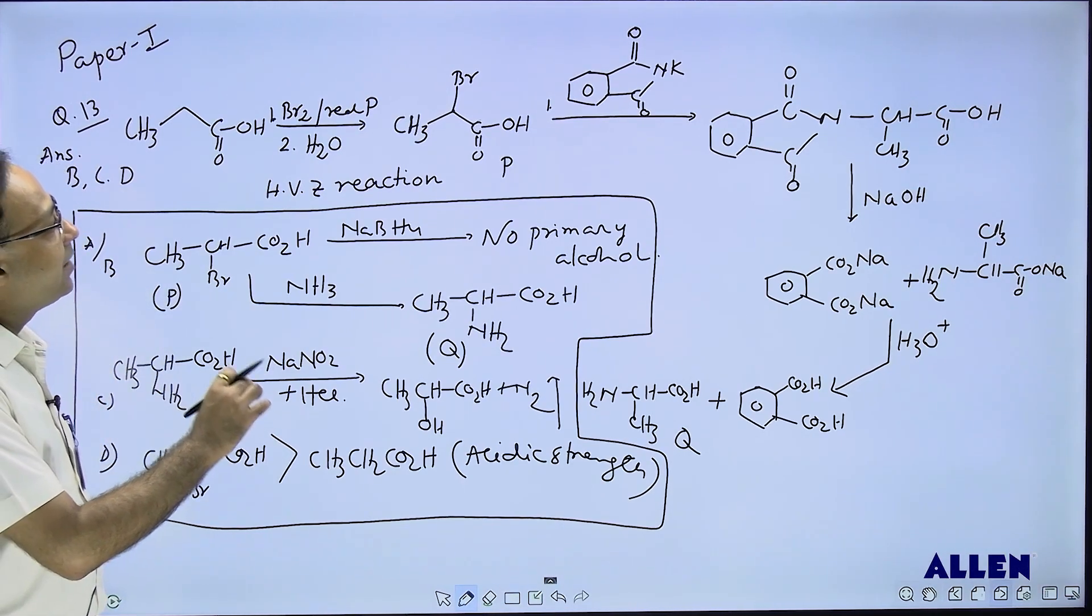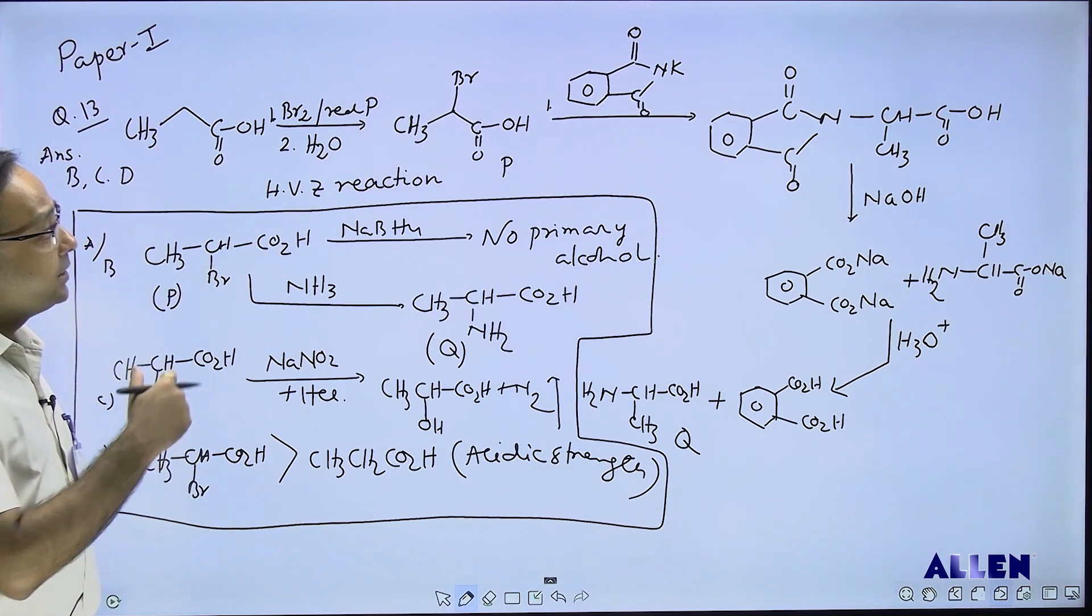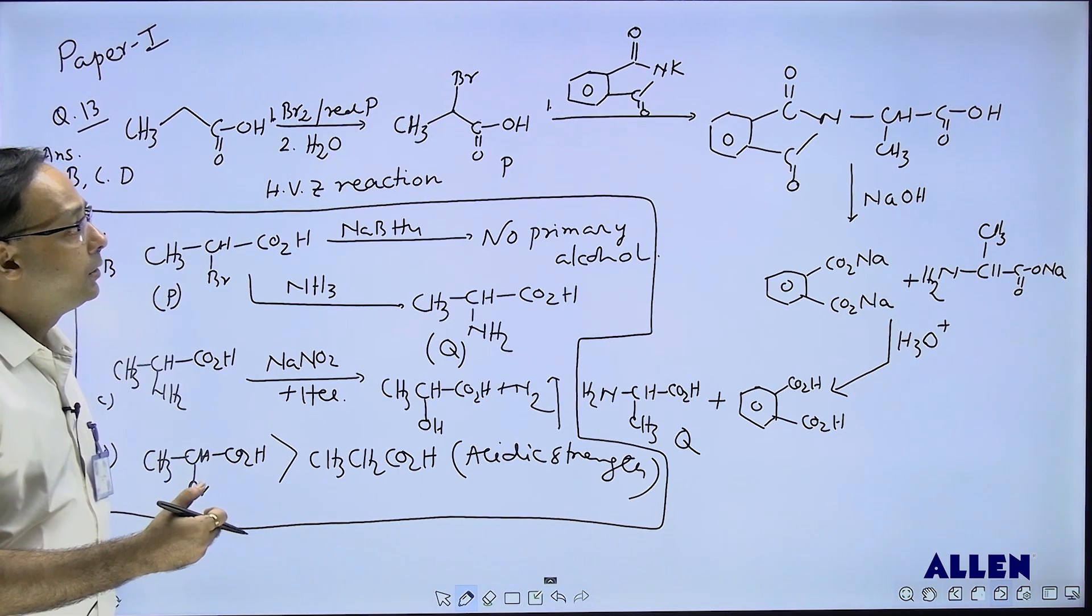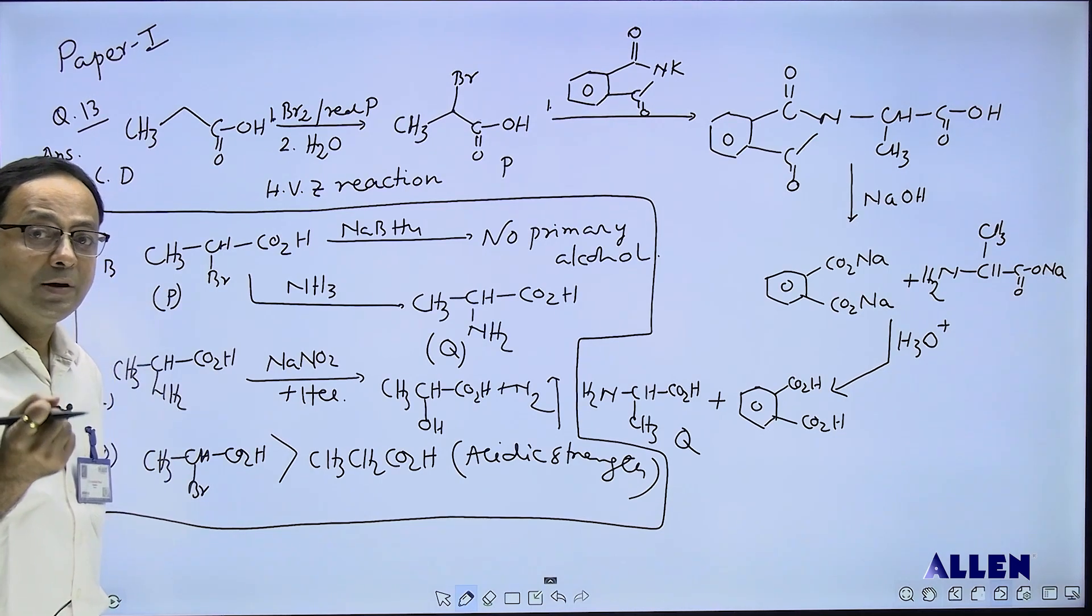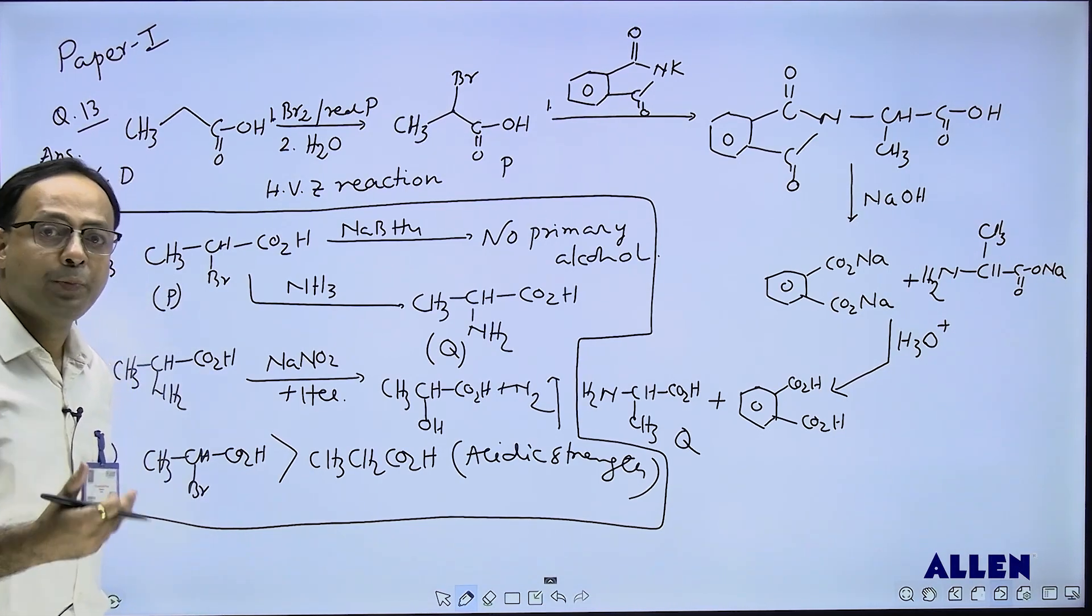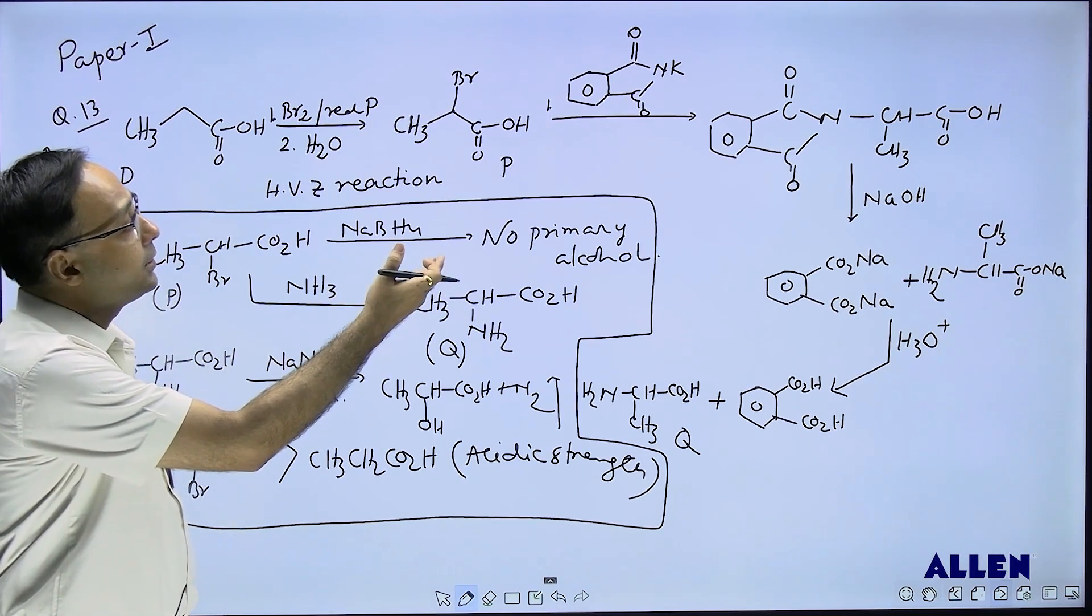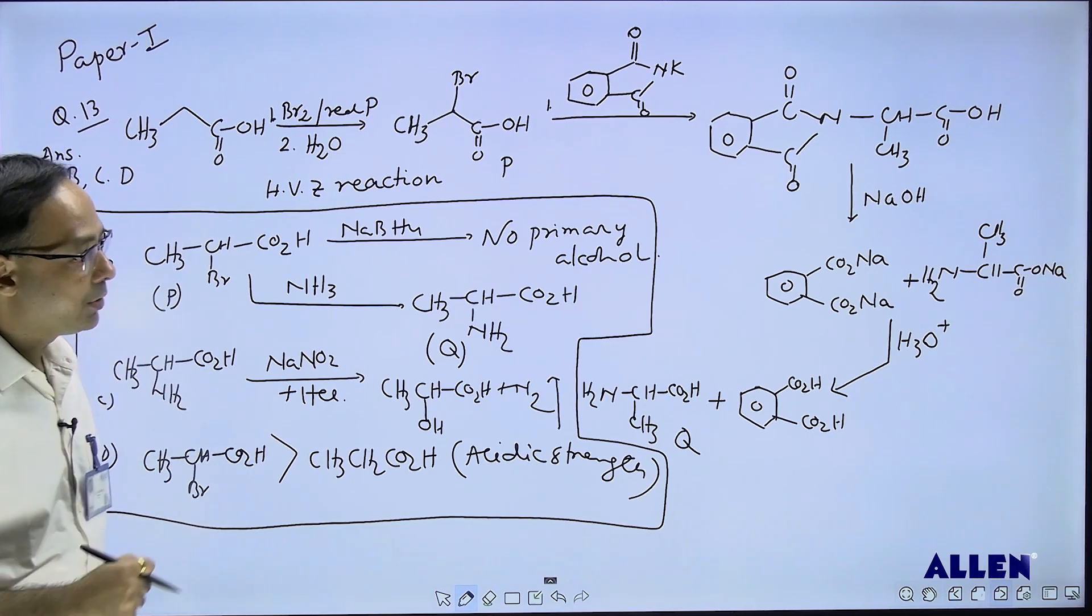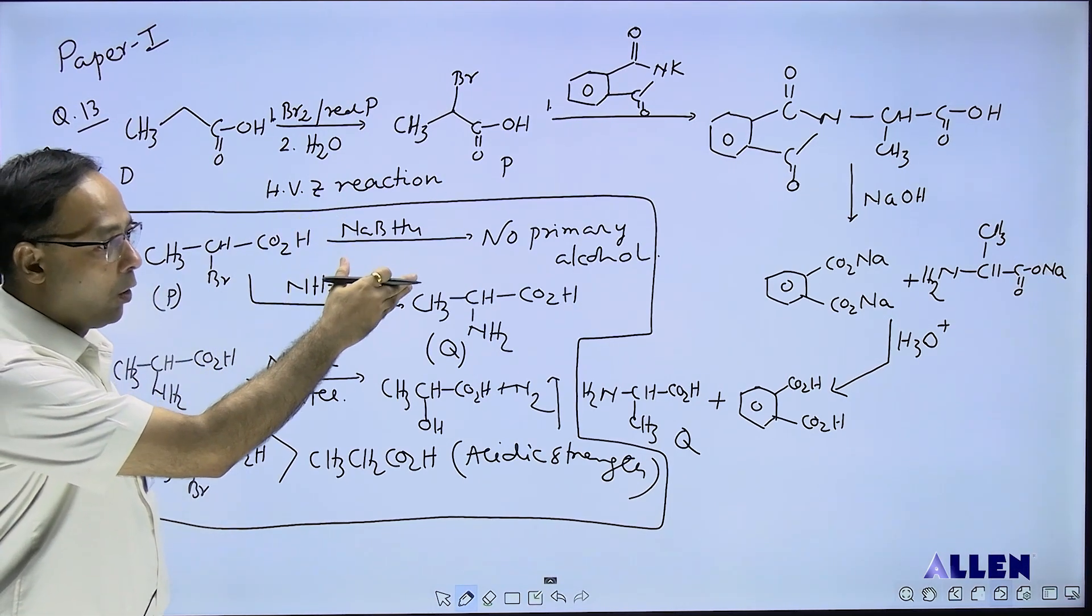This P is treated with phthalimide potassium salt, which is Gabriel phthalimide synthesis to prepare amino acid. First, nitrogen with negative charge through its lone pair attacks and bromine is substituted. After that, the final product is treated with aqueous NaOH.